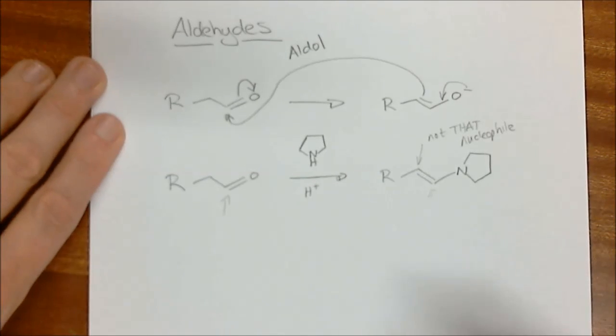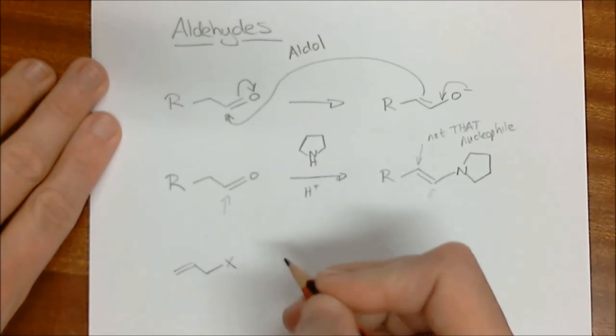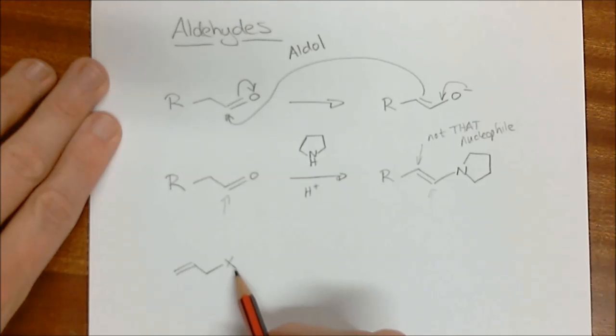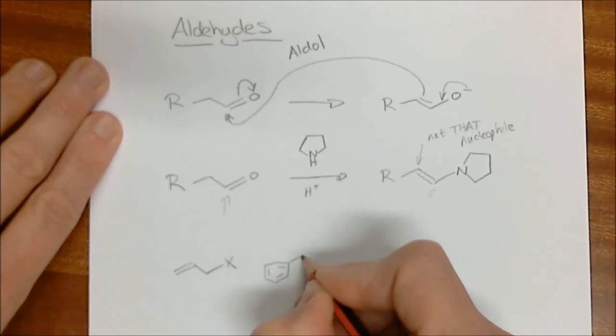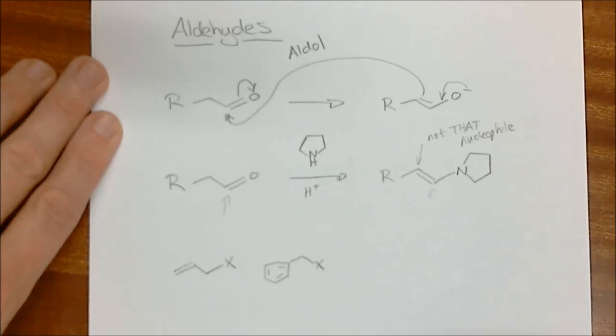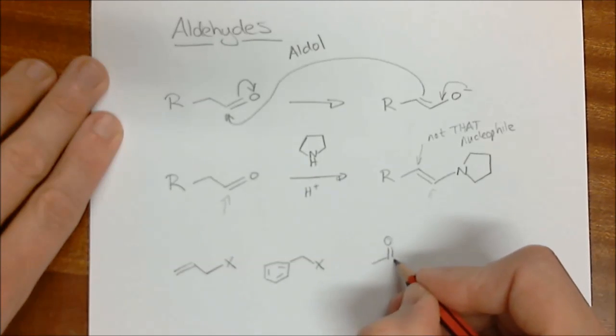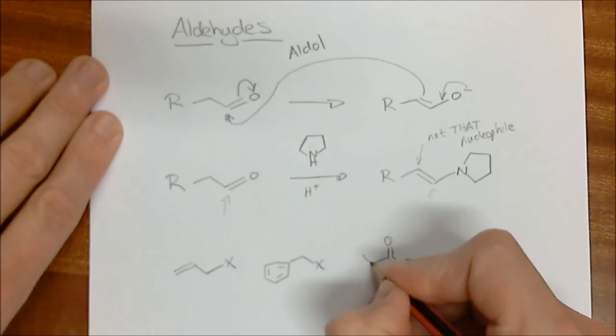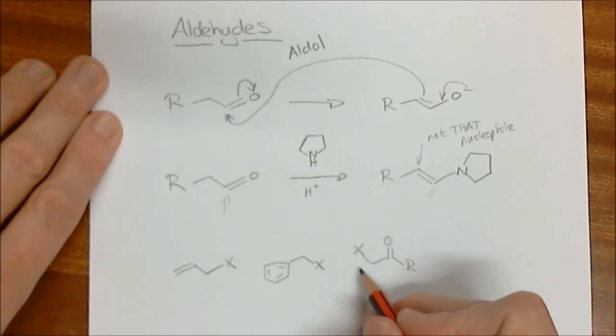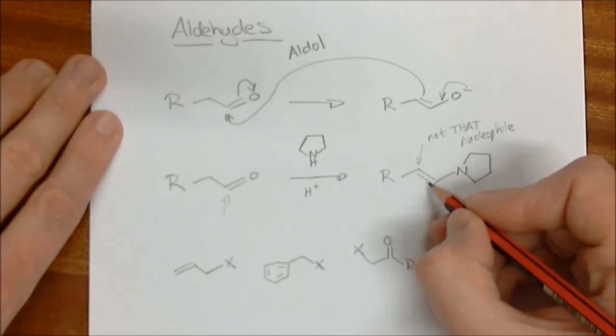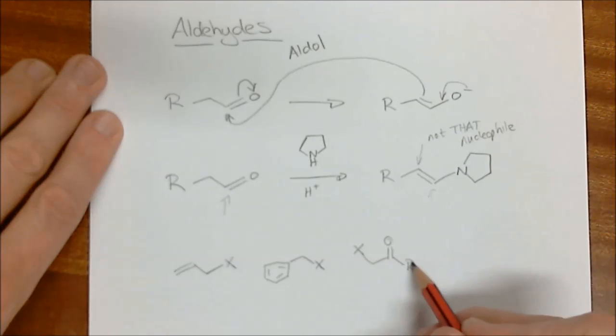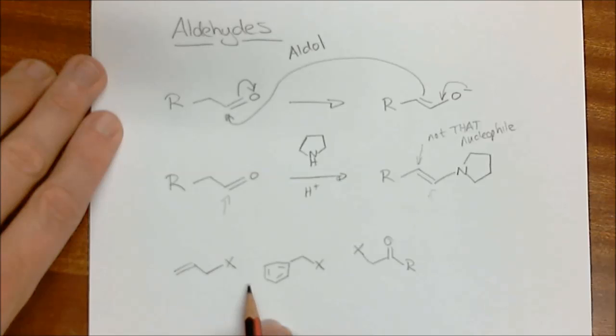The limited electrophiles that will work are things like allylic halides that have an allylic leaving group on it, and likewise the benzylic halides will work as well. And the third one that works is the alpha-halo carbonyl compounds, so the chlorine, bromine, and that sort of thing. Those are the only ones - they're very reactive electrophiles and the only ones that will work with enamines in order to alkylate them.